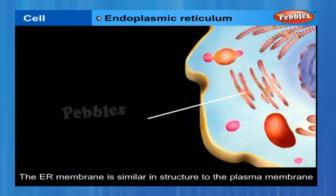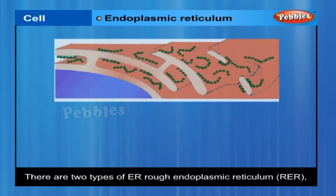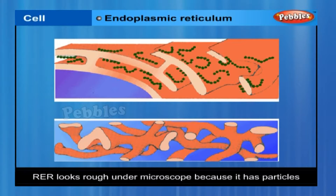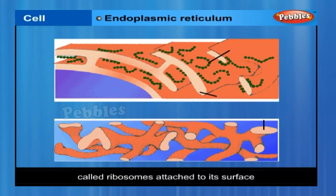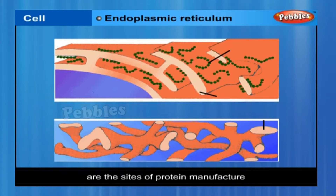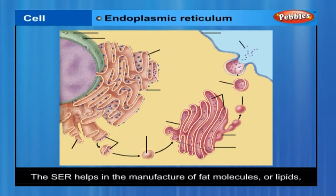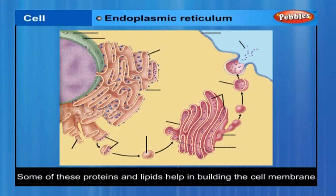There are two types of ER: rough endoplasmic reticulum (RER) and smooth endoplasmic reticulum (SER). RER looks rough under a microscope because it has particles called ribosomes attached to its surface. Ribosomes, present in all active cells, are the sites of protein manufacture. The manufactured proteins are then sent to various places in the cell using the ER. The SER helps in the manufacture of fat molecules or lipids important for cell function, and some of these proteins and lipids help in building the cell membrane.